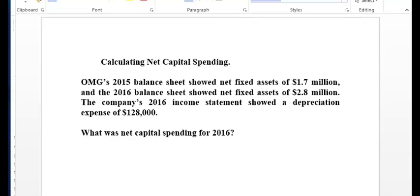So we have a company called OMG. In 2015, they had a balance sheet of net fixed assets of $1.7 million.